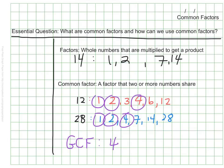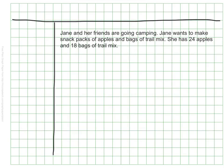But why is it important to find the common factors? Let's look at a real life problem and see how we could use common factors to solve this and why it would be useful. Let's look at this situation. Jane and her friends are going camping. Jane wants to make snack packs of apples and bags of trail mix. She has 24 apples and 18 bags of trail mix. The problem is she has to divide these up among her friends. If she wants to make packs that are equal, how many packs can she make? And I wonder if there's more than one way that she could organize her food equally.